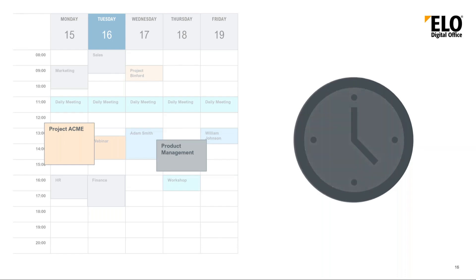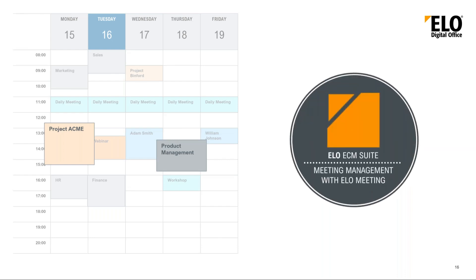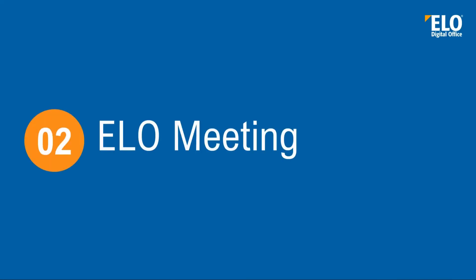This can be done with the business solution ELO Meeting, because with ELO Meeting you have everything in one place and you know where to look. You don't have to search Outlook, your mails, or your files. You can find everything in the ELO ECM Suite, in ELO Meeting. So what can you do with ELO Meeting?